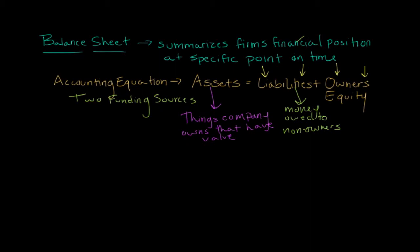Now anything left over is considered to be owner's equity. This is money owed to owners. So anything left over after liabilities is essentially owner's equity.